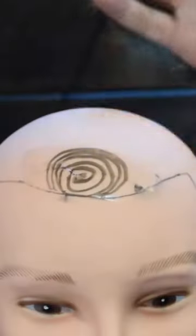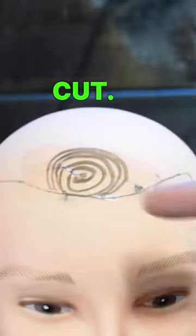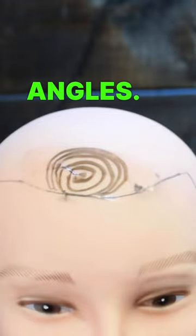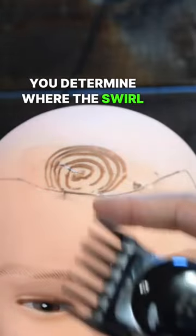This is the hardest type of cowlick to cut. You have to cut from all angles - this way, this way, this way, and this way. I'll also go this way. Once the hair is a little bit lower, that'll help you determine where the swirl starts and you'll know which areas to attack more.